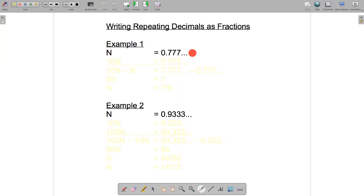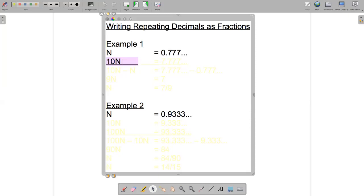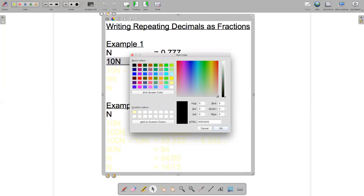Next we need to multiply n by a multiple of 10 so that we're going to be able to eliminate that repeating decimal part of the number. So this is best done by illustration. So in this case if we multiply n by 10 we would get 7.7777 and so on.